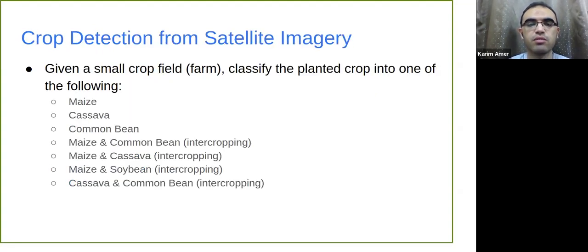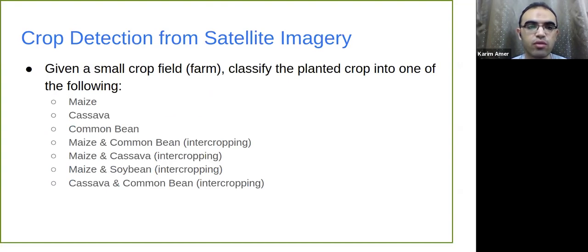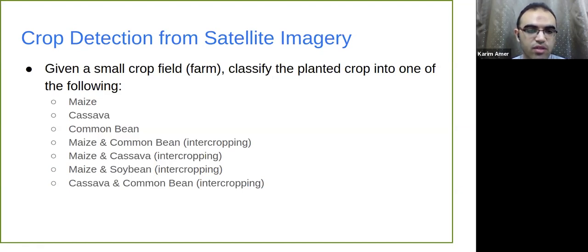So let me take you through the competition. The crop detection from satellite imagery competition — the main objective was to classify the planted crop in a given small crop field into one of the following classes: maize, cassava, common bean, intercropping of maize and common bean, intercropping of maize and cassava, intercropping of maize and soybean, and intercropping of cassava and common bean.